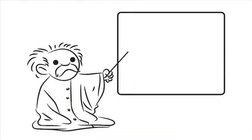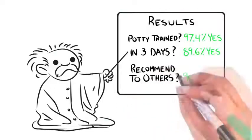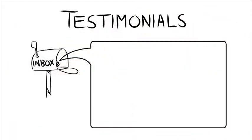The results were as follows: Is your child now fully potty trained? Yes, 97.4%. Did you get results within the first three days? Yes, 89.6%. Would you recommend StartPottyTraining.com to others? Yes, 98.9%. Will you use these methods if you have another child? Yes, 96.3%.